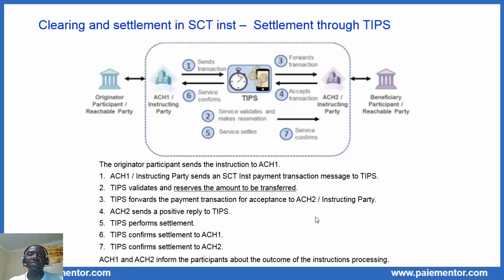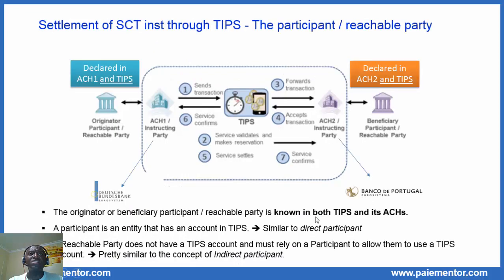Now, let's take a closer look at the participants and ACH. The originator participant or reachable party is known by both TIPS and its ACH. It is important to understand this: TIPS debits and credits accounts of participants, not accounts of ACH. A participant is an entity that has an account in TIPS, and that account is used to settle transactions. A reachable party does not have a TIPS account and must rely on a participant that allows them to use its account — similar to the concept of indirect participants.